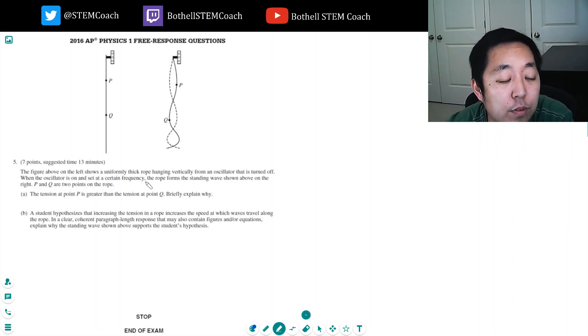The figure above on the left shows a uniformly thick rope hanging vertically from the oscillator turned off. When the oscillator turns on instead of a certain frequency, the rope forms a standing wave shown on the right. P and Q are two points on the rope. The tension at point P is greater than at point Q.